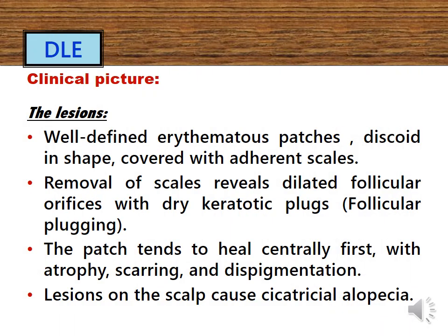The discoid lupus erythematosus lesions are well-defined erythematous patches, discoid in shape, covered with adherent scales. On removal of these scales, there are dilated follicular orifices with dry keratotic plugs, called follicular plugging, which appears as black dotting in the center of the lesion. The patch tends to heal centrally first, with atrophy, scarring, and dyspigmentation. If the lesions occur on the scalp, they cause cicatricial alopecia.